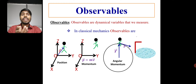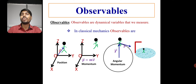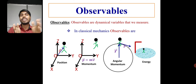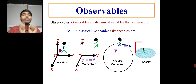Another very important observable in classical mechanics is energy. If this person is jumping into a swimming pool, at each and every point we can measure the kinetic energy and the potential energy of that person. These variables we can measure precisely in classical mechanics, in the classical sense.